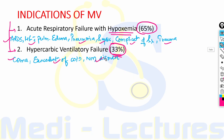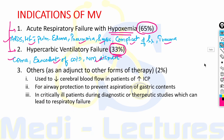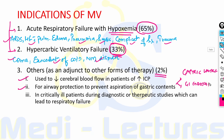Additional indications constitute 2% of all cases and are used as adjuncts to other therapy. Mechanical ventilation can be used to decrease cerebral blood flow in patients with raised intracranial pressure, for airway protection to prevent aspiration of gastric contents during gastric lavage in drug overdose or GI endoscopy, and in critically ill patients during diagnostic or therapeutic studies that may lead to respiratory failure.